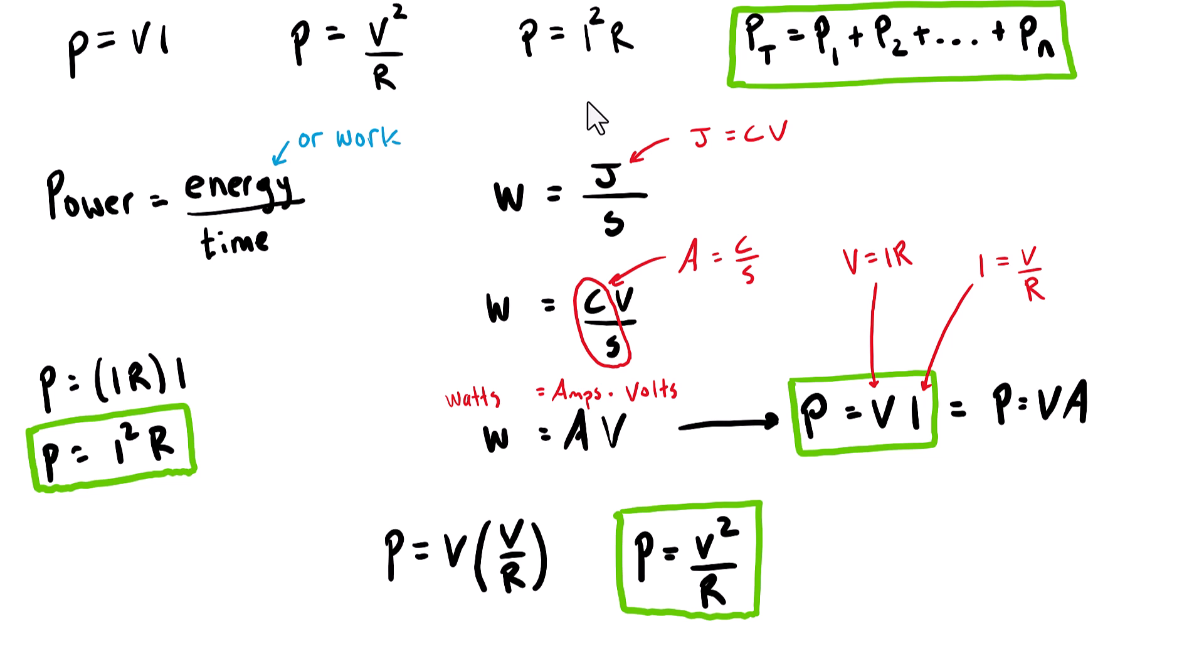I usually just tend to memorize p equals VI. And from that, you can always use Ohm's law to get to the other two. Or if you want to go all the way back, you can remember all this stuff. But maybe that's more work than it's worth.